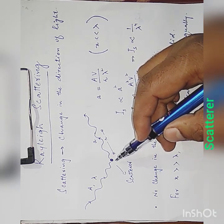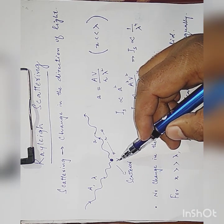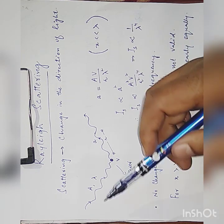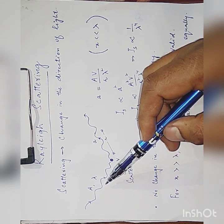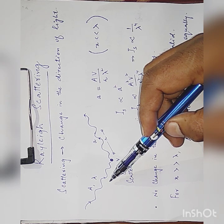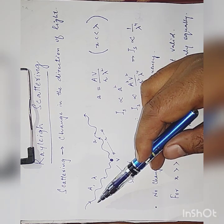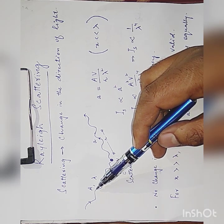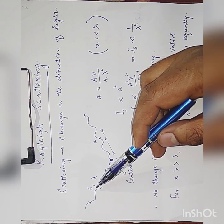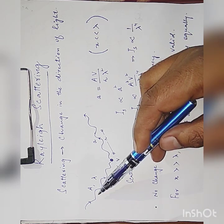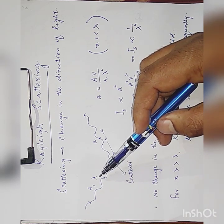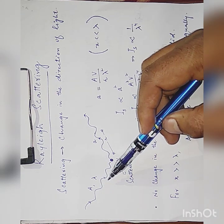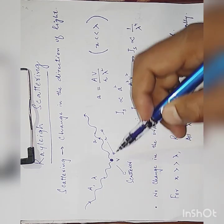So I have a particle whose volume is V. And the incident light coming here — for example, sunlight — its amplitude, let that be capital A, and its wavelength, let that be lambda.